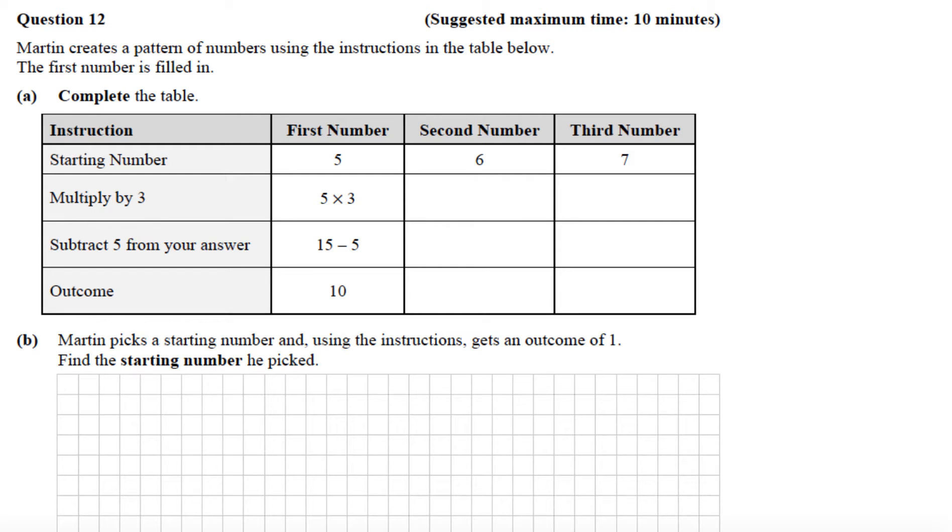This is the 2015 Junior Cert Ordinary Level Paper 1, and we're looking at question number 12, the last question on the paper. Martin creates a pattern of numbers using the instructions in the table below. The first number is filled in. Part A says complete the table.